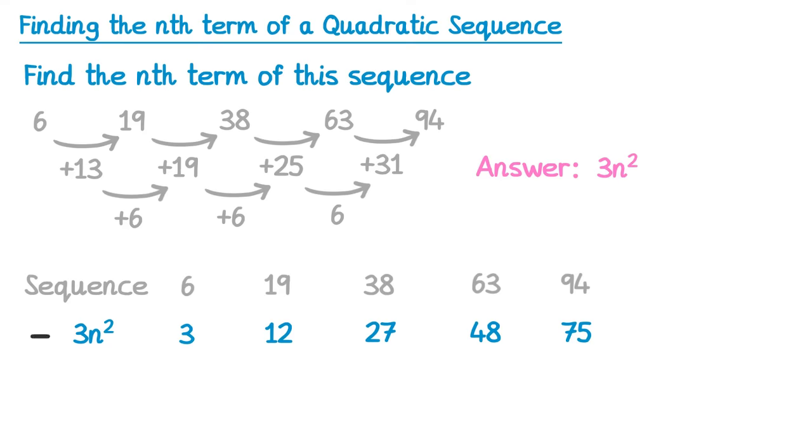To do this, we're going to subtract the sequences. So 6 take away 3 is 3, 19 take 12 is 7, 38 take 27 is 11, 63 take 48 is 15, and finally 94 take 75 is 19. This is a new sequence here, but if we added this sequence to 3n squared, we know we'd get our sequence.